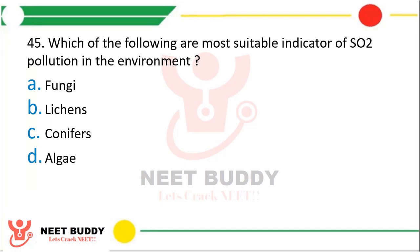Question number 45: Which of the following are the most suitable indicators of SO2 pollution in the environment? Fungi, lichen, conifers, or algae. The correct answer is Option B, lichens.